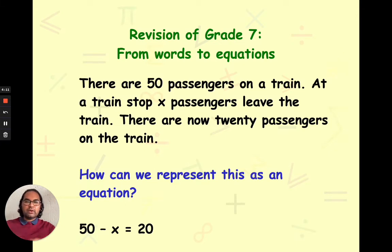Here, we're going to look at how do we go from words to forming equations. For example, there are 50 passengers on a train. At a train stop, X passengers leave the train. There are now 20 passengers on the train. How can we represent this as an equation? And we represent it with 50 minus X equals 20. So, we had 50, X have left, and we're now left with 20.